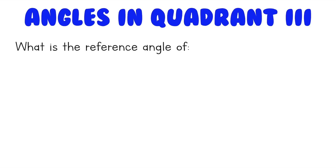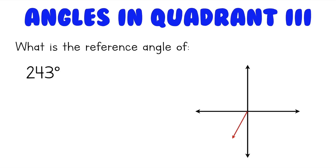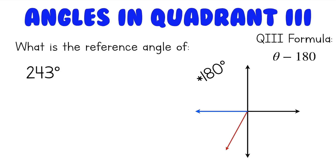What about an angle in quadrant three? What is the reference angle of 243 degrees? Here's our coordinate plane and here's a 243 degree angle. An angle in the third quadrant is always on this side of the coordinate plane, so it will make an angle with the negative x-axis. To find the reference angle of an angle in the third quadrant, we do that angle minus 180 degrees. So 243 degrees minus 180 degrees gives us 63 degrees.